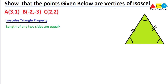Let's start by using the distance formula. Whenever you have to find the length of any side where just the points are given, you use the distance formula because it gives a single value from two given points. So let's write the distance formula.